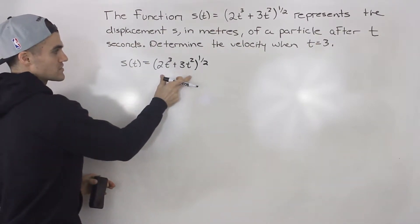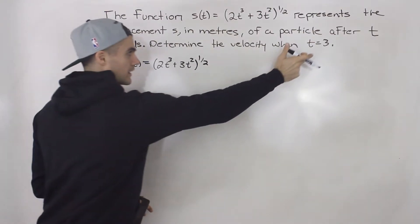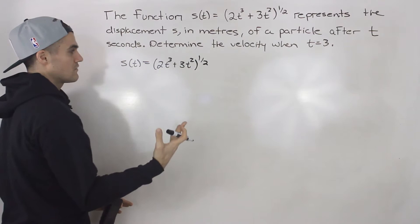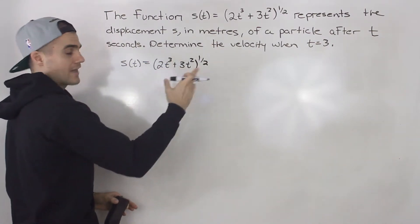So we can find the derivative of this function and then have a velocity function, then we can just plug in a t value of 3 in the velocity function to determine the instantaneous velocity at 3 seconds.